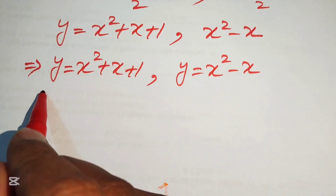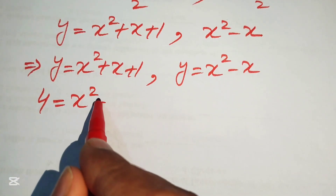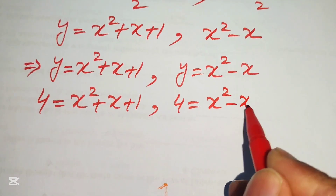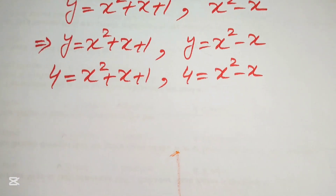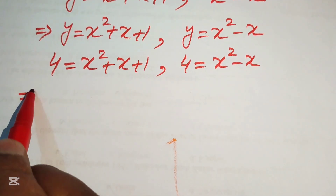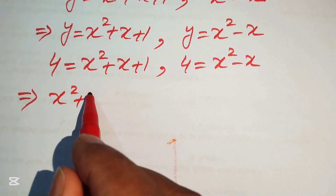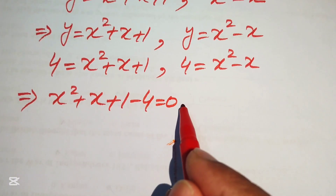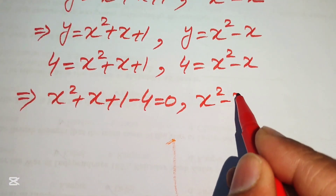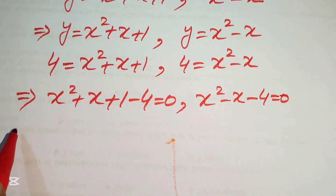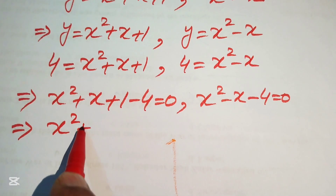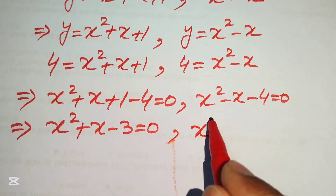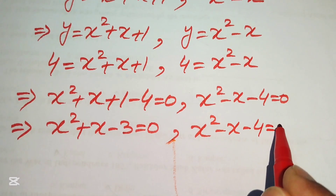Now we back-substitute y equals 4. From the first case, 4 equals x squared plus x plus 1, which rearranges to x squared plus x minus 3 equals 0. From the second case, 4 equals x squared minus x, which rearranges to x squared minus x minus 4 equals 0.